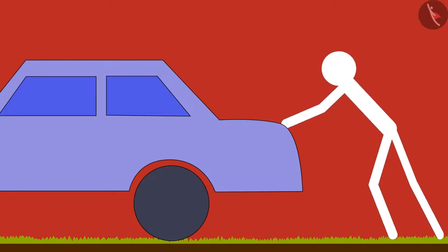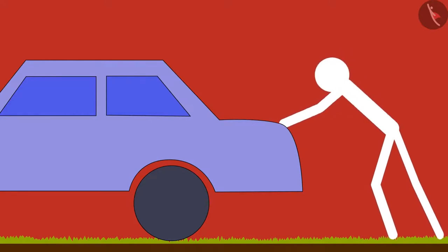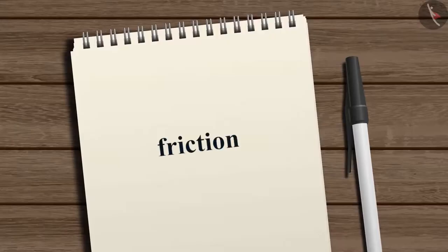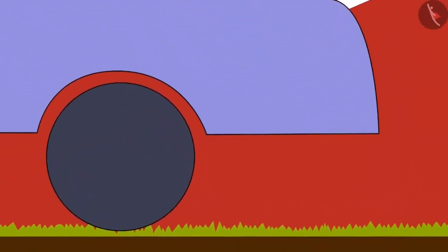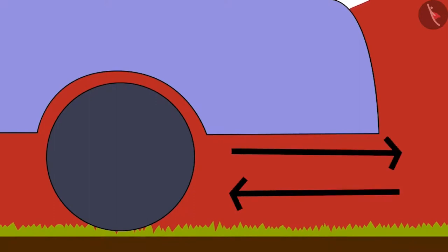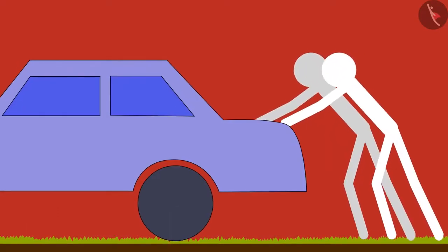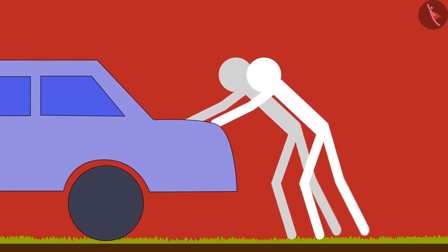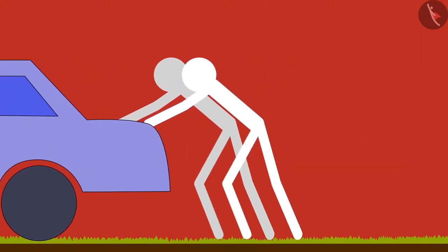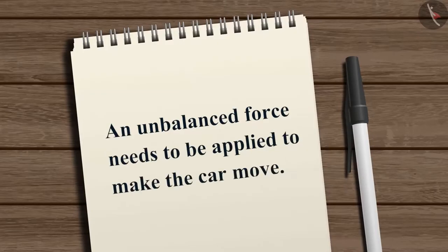Let us now consider another example of pushing a car on the street. If we push using less force, the car may not move at all. This is due to the friction acting in the opposite direction of the push. Friction arises as the wheels of the car are in contact with the rough surface. Here, the force of friction balances the pushing force and hence the car does not move. To move the car, we need to apply a force greater than the force of friction.